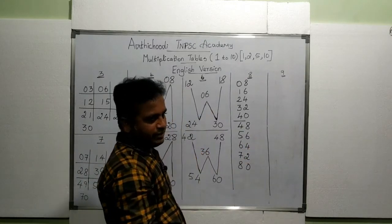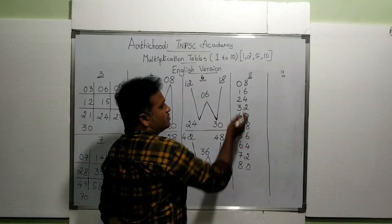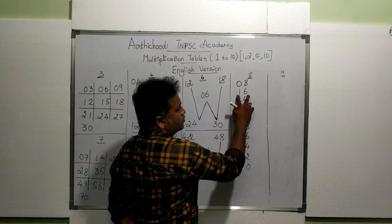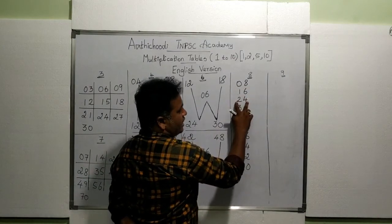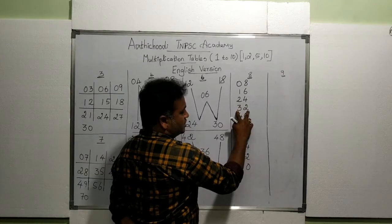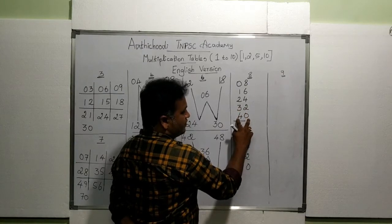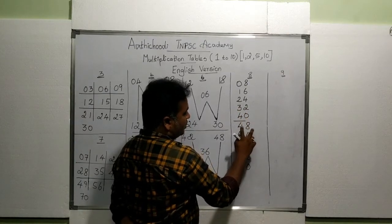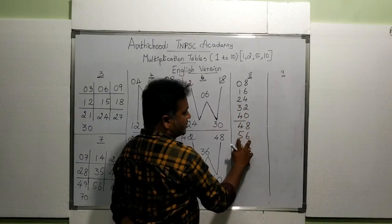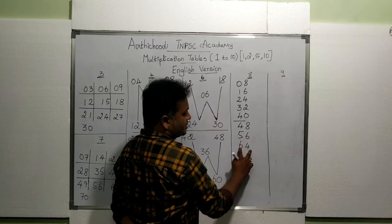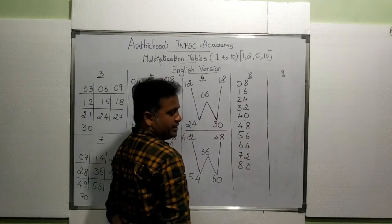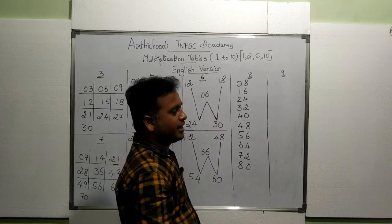Now the eighth table is ready. Read: 8 ones are 8, 8 twos are 16, 8 threes are 24, 8 fours are 32, 8 fives are 40, 8 sixes are 48, 8 sevens are 56, 8 eights are 64, 8 nines are 72, 8 tens are 80.